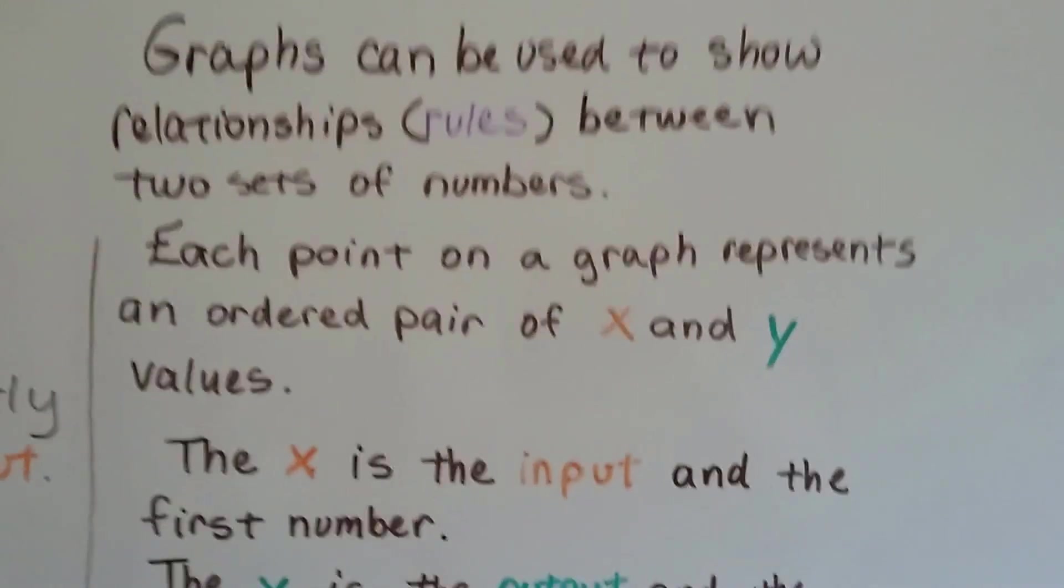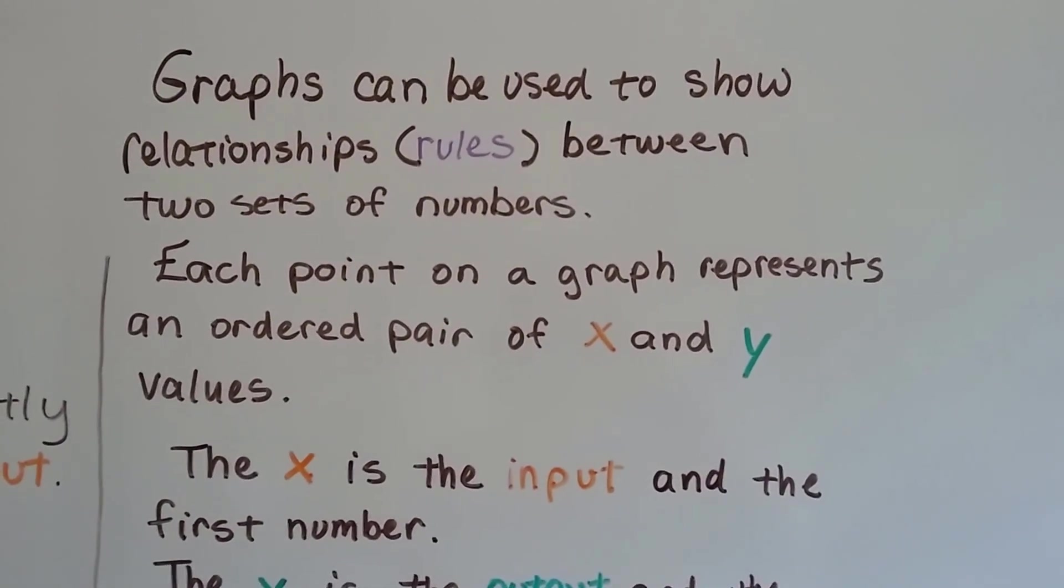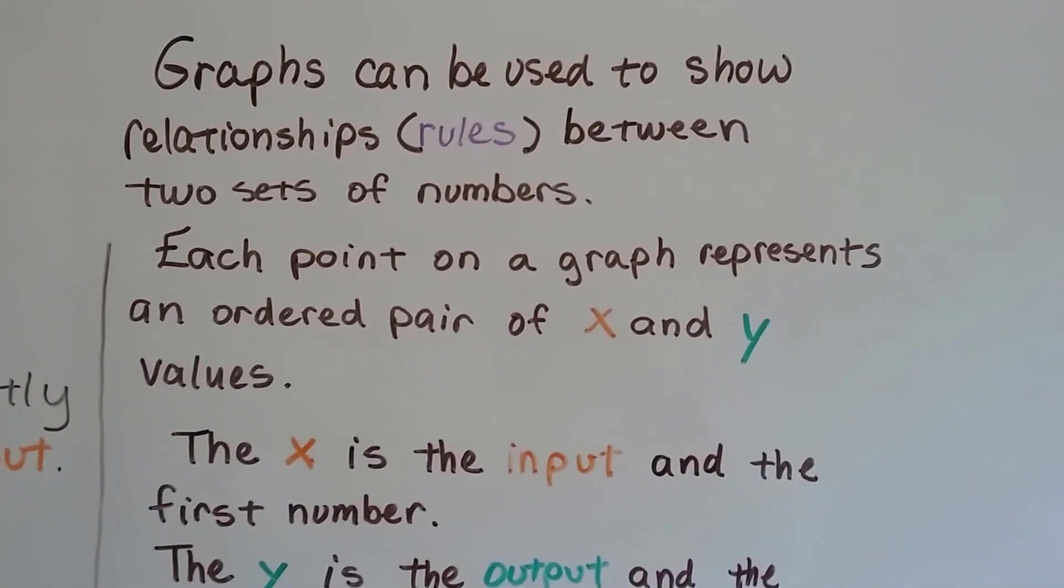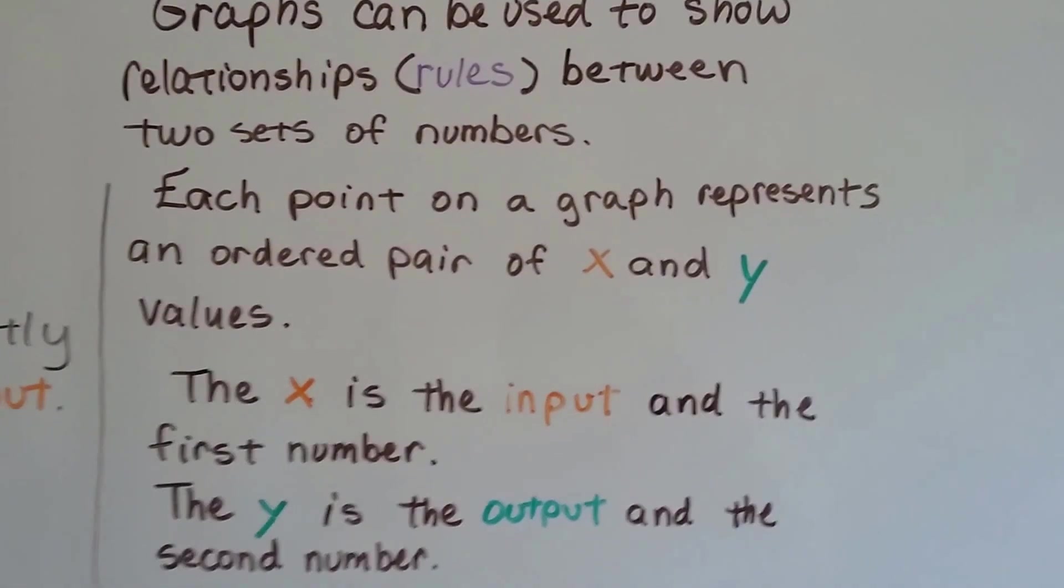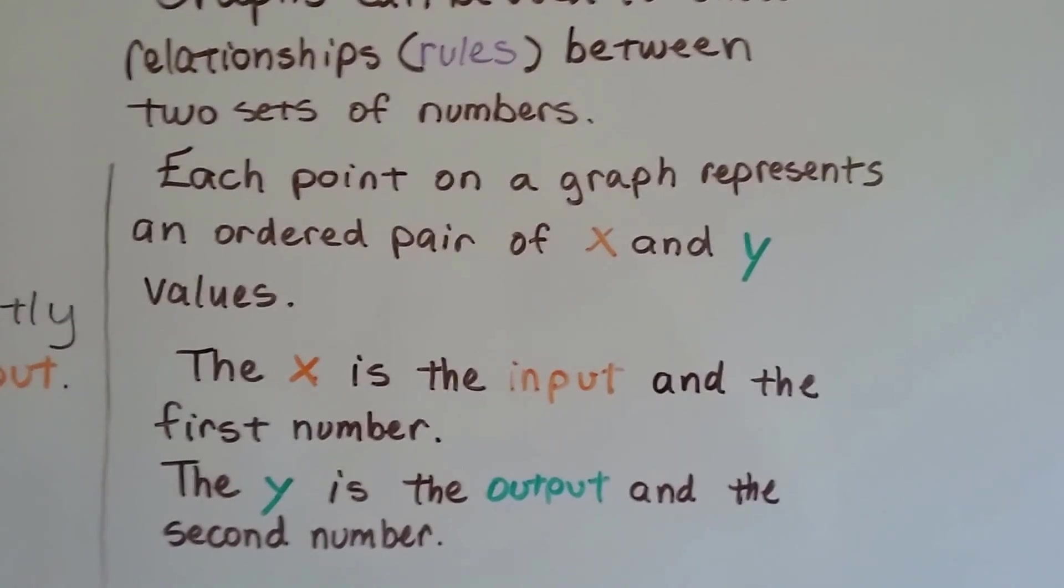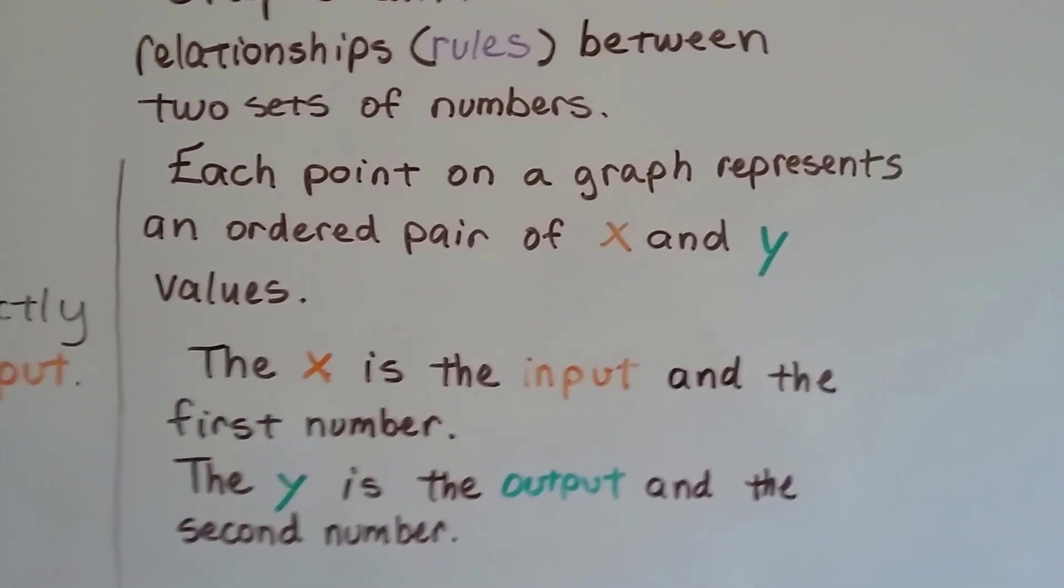So graphs can be used to show relationships, the rules between two sets of numbers. And each point on a graph represents an ordered pair of x and y values. The x is the input and the first number, and the y is the output and the second number.